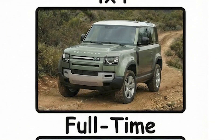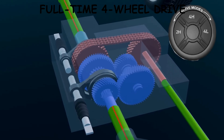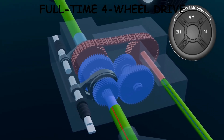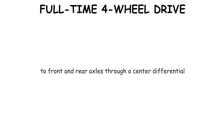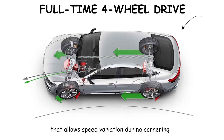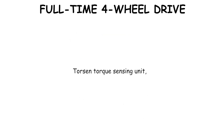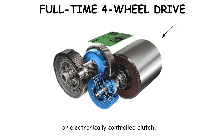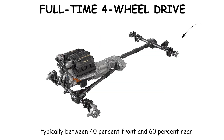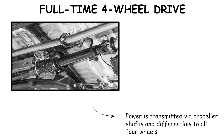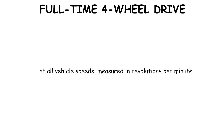Full-Time Four Wheel Drive is a drivetrain that continuously distributes engine torque to front and rear axles through a center differential that allows speed variation during cornering. The center differential may be a planetary gear set, TORSEN torque-sensing unit, or electronically controlled clutch, specified to balance torque typically between 40% front and 60% rear. Power is transmitted via propeller shafts and differentials to all four wheels at all vehicle speeds, measured in revolutions per minute.